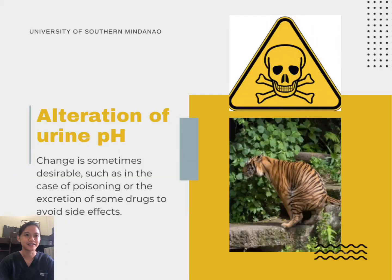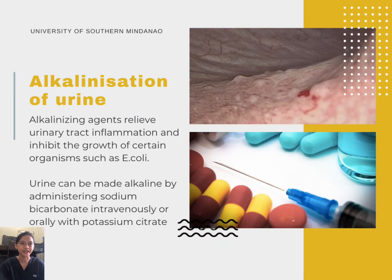Alkalization of urine — alteration of urine pH — is sometimes desirable, such as in the case of poisoning or the excretion of some drugs to avoid side effects. Alkalinizing agents relieve urinary tract inflammation and inhibit the growth of certain organisms such as E. coli. Urine can be made alkaline by administering sodium bicarbonate intravenously or orally with potassium citrate.